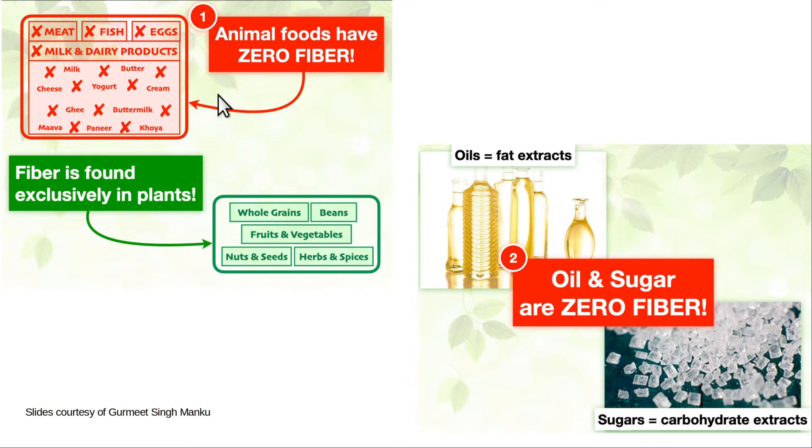Animal foods have no fiber. Zero fiber. That's why, if you eat that stuff, you're not going to get any fiber. Fiber is found just in plants. So you eat regular whole food plants, you get plenty of fiber.